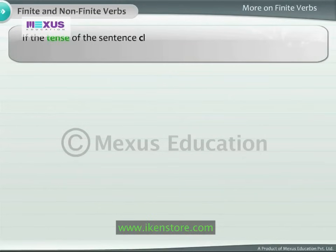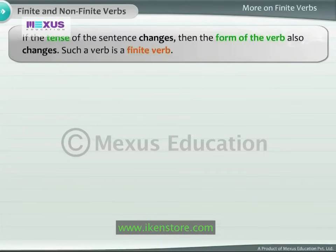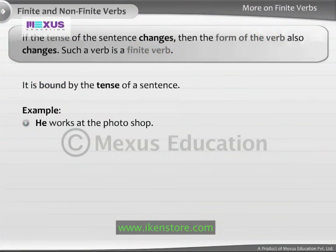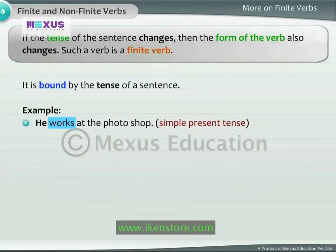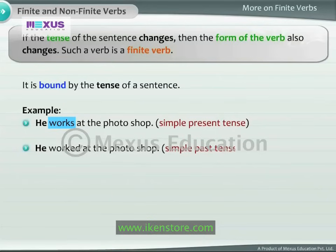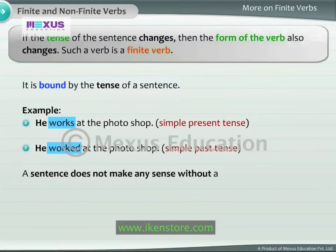If the tense of the sentence changes, then the form of the verb also changes. Such a verb is a finite verb — it is bound by the tense of a sentence. For example, 'He works at the Photoshop' is in simple present tense. As a result, the finite verb changes from 'works' to 'worked.' It agrees with both the subject 'he' and the tense of the sentence. A sentence does not make any sense without a finite verb. A finite verb gives meaning to a sentence.